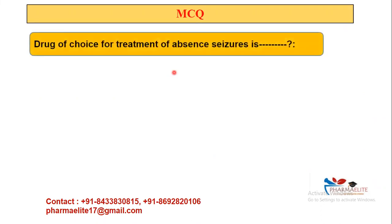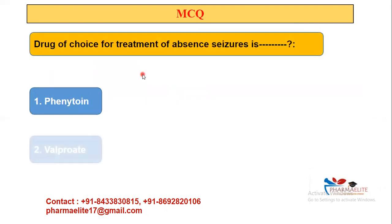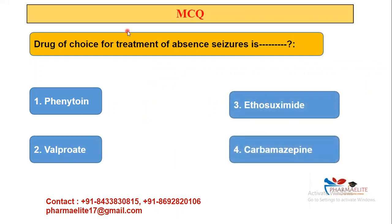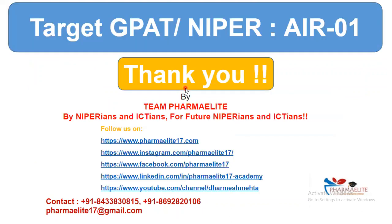Next MCQ: Drug of choice for treatment of absence seizures. Options are phenytoin, valproate, ethosuximide, and carbamazepine. Valproate is used in all types of seizures, but it is specifically the drug of choice for absence seizures — where the patient stares blankly. The answer is valproate.